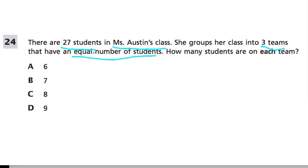When they say they divide the teams into equal numbers, that means there are the same number of people on every team. So if you start with 27 and you want to split them into three groups, you can think: if I have 27 and I divide it by three, how much does each person actually get?